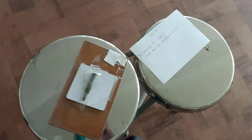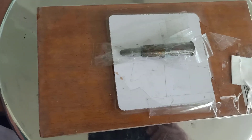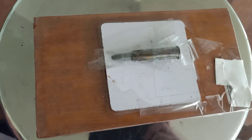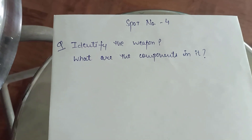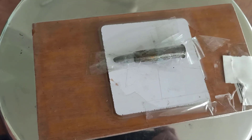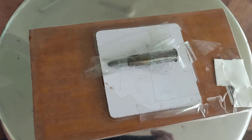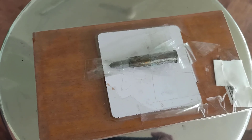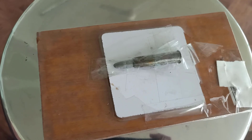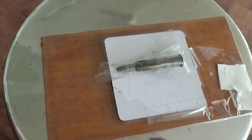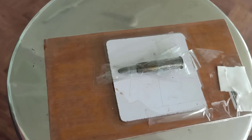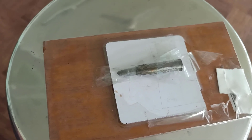The next spot, spot number 4, was a cartridge of a rifled firearm. This is not a bullet — this is a cartridge. The question asked was: identify the weapon and what are the components in it? The components are: at the base there is a percussion cap, in the center a primer, then the cartridge case, and in the cartridge case we have propellants — that is the gunpowder — then the bullet.